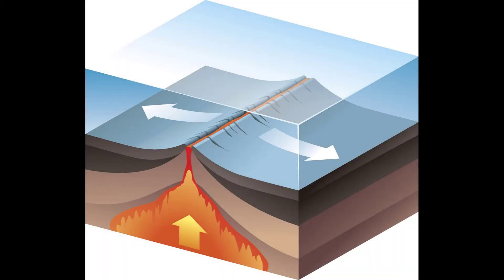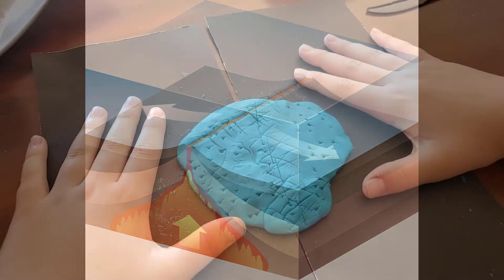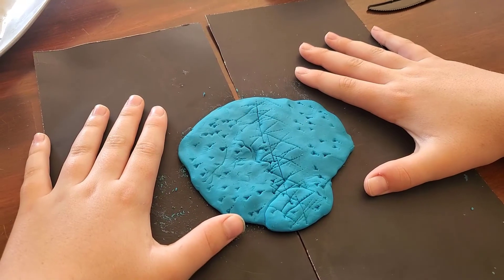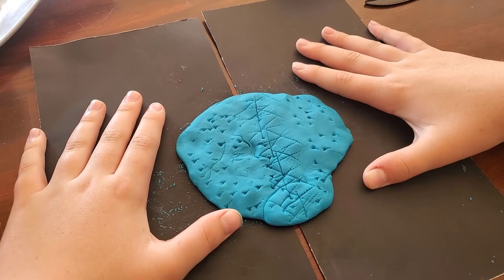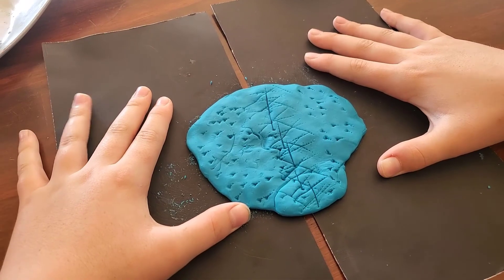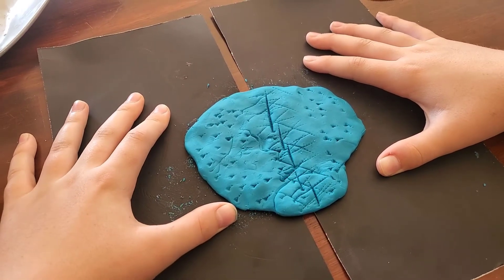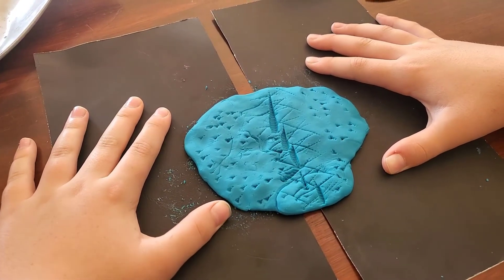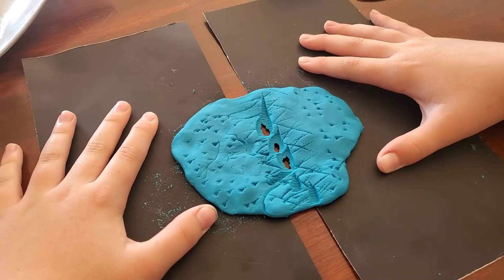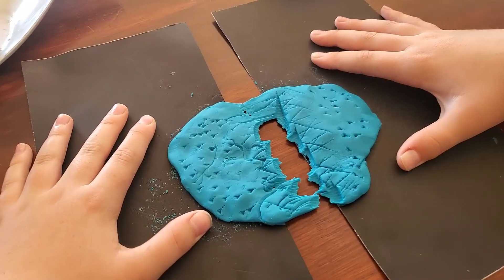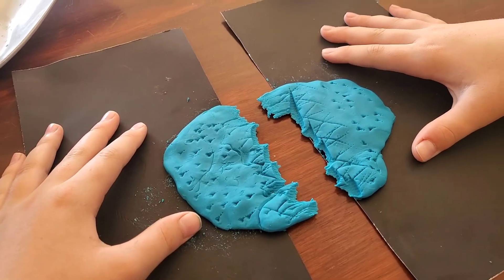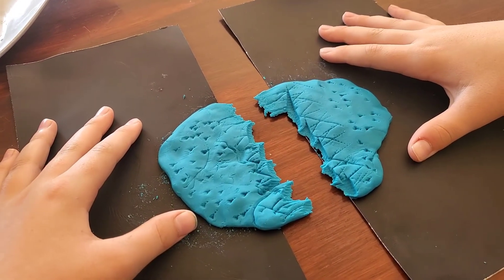Now we're going to look at what happens when two plates move away from each other. This is called divergence. Notice how when the asthenosphere separates, the lithosphere breaks apart. This allows magma to fill in the gap and cause a breach.